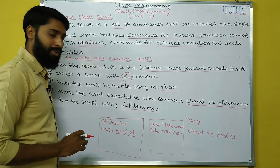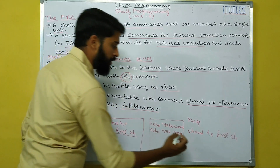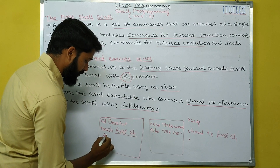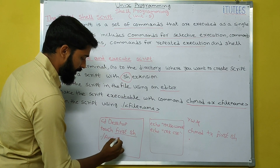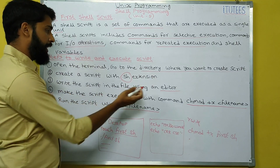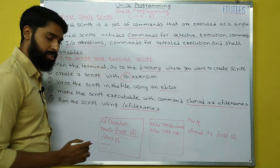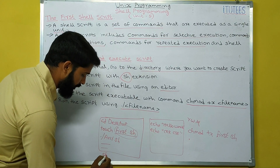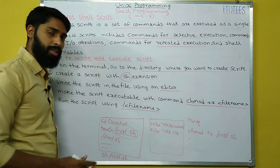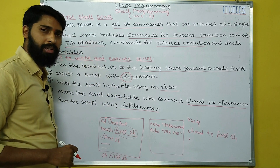The last step is run the file. Run the script using dot slash: ./first.sh. Another way is, when you are creating the file, you can directly execute it as sh first.sh. We can see this process practically.